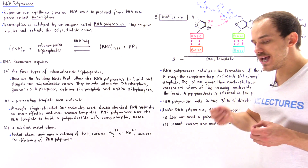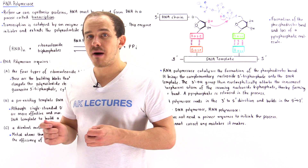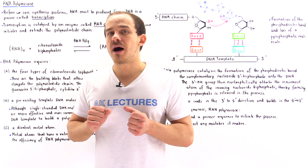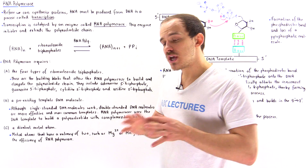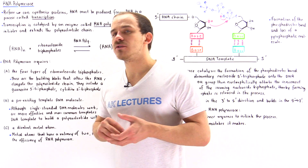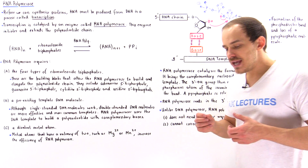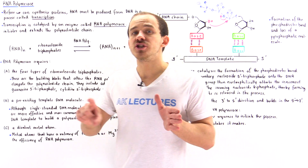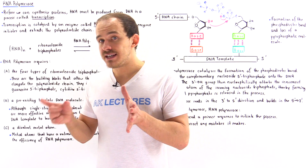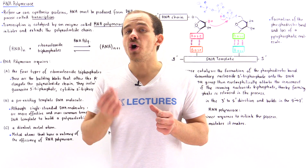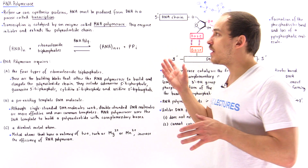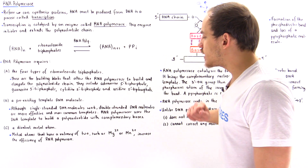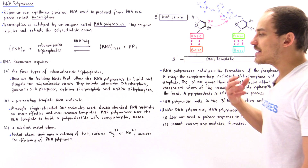Second, RNA polymerase needs a pre-existing DNA template molecule. Usually we're dealing with a double-stranded DNA molecule, which works best, but in some cases we can also use single-stranded DNA molecules as templates. We need the DNA template to copy the genetic information — it's the template that is used to bring those complementary bases to that elongating polynucleotide chain. Although single-stranded DNA molecules work, double-stranded DNA molecules are more effective and more common as templates.